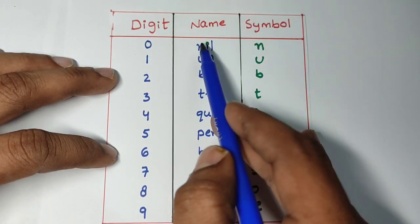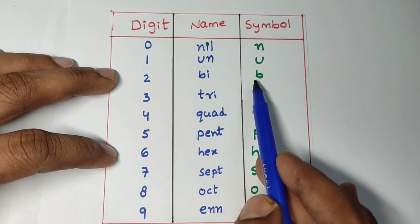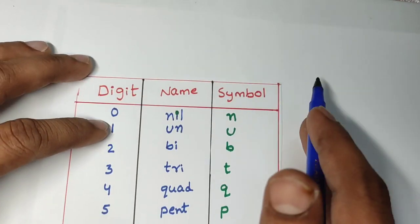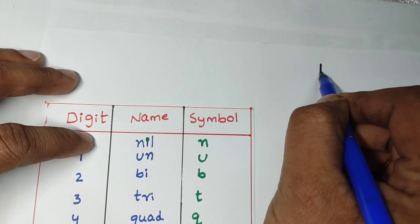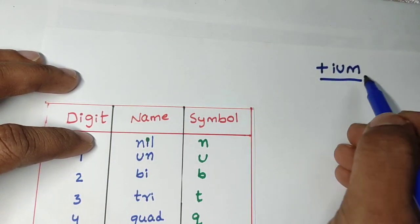And the symbol is the first alphabet we have to take. For example, nil is n, bi is b, like that. And after writing everything, finally we have to add IUM. What we have to add? IUM.